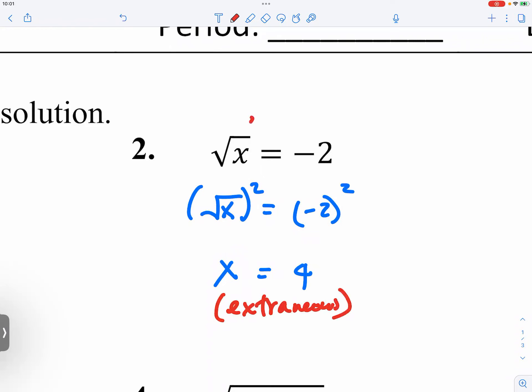Think about this. You have square root of x equals negative two. What kind of x value could produce such a statement?